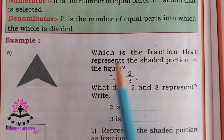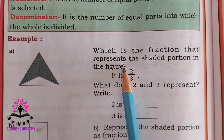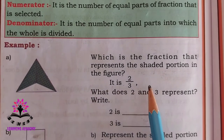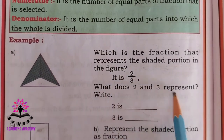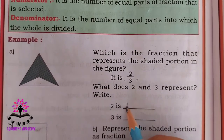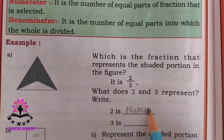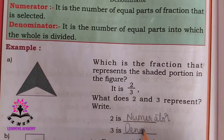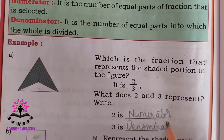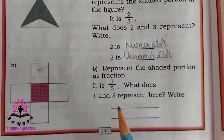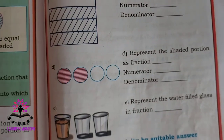Which is the fraction that represents the shaded portion in the figure? There are three parts and two parts are shaded, so it is two by three. Two is the numerator and three is the denominator. The remaining problems you have to solve by yourself.